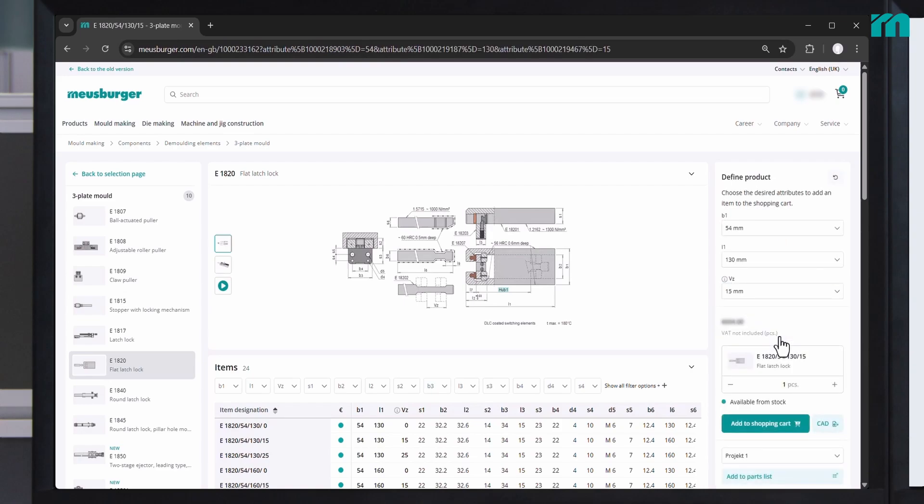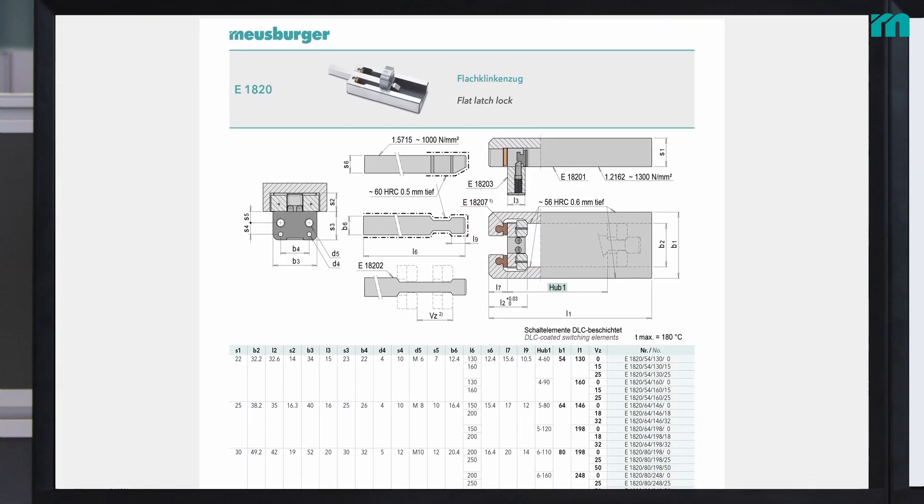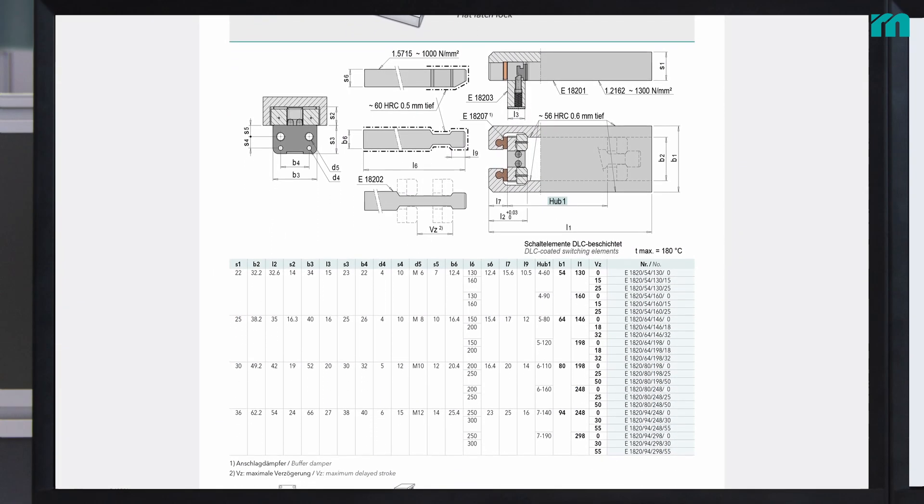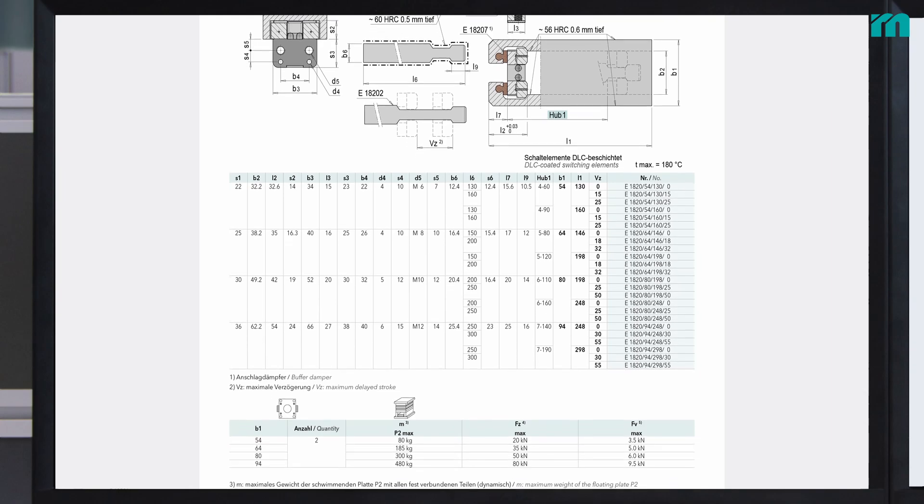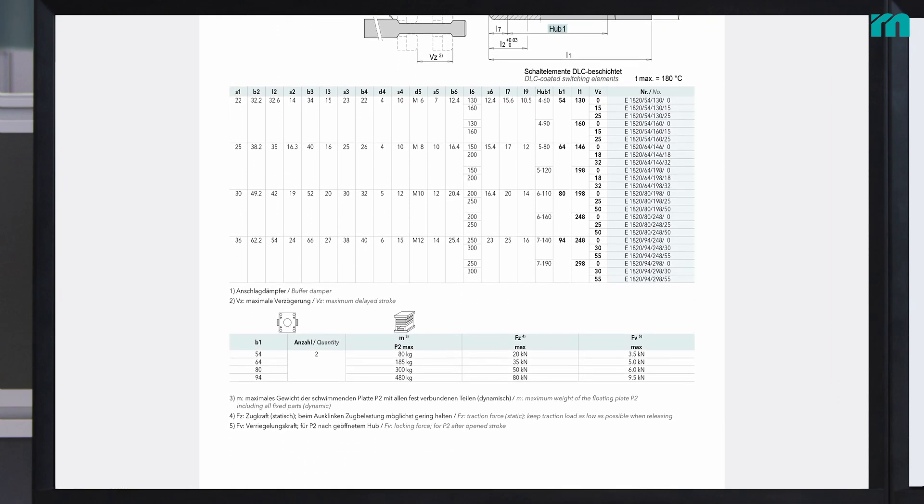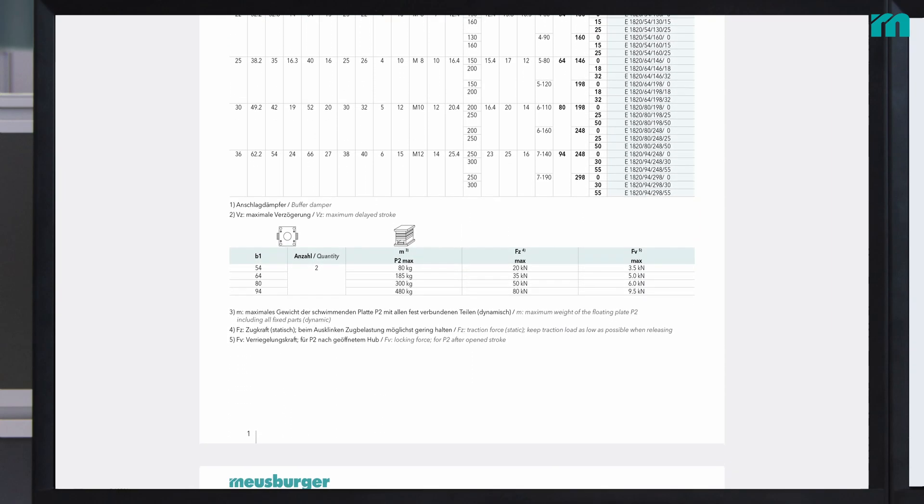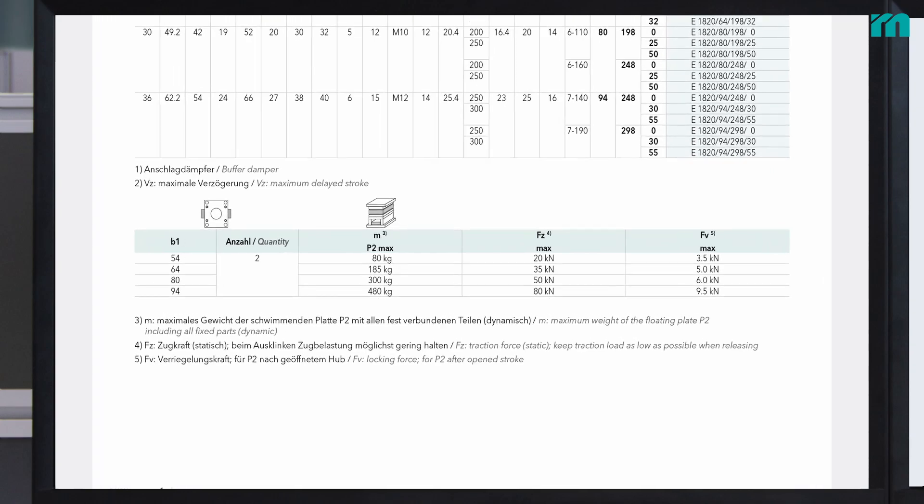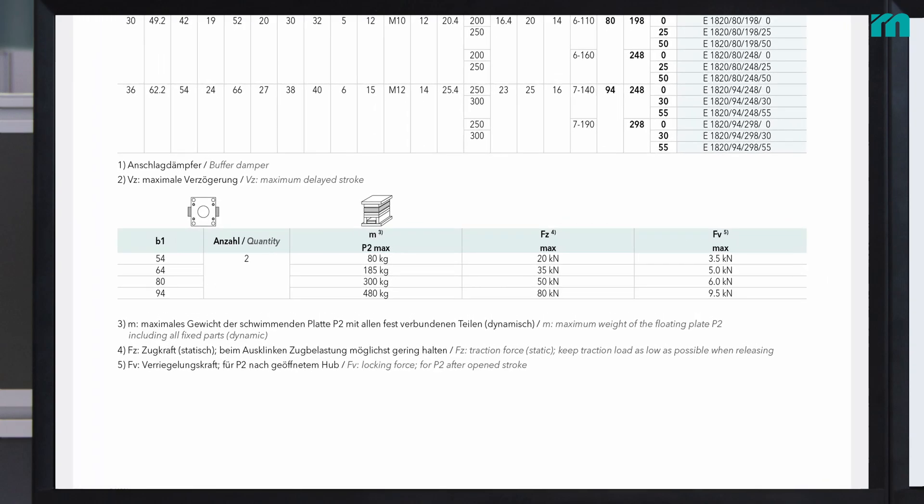The information on the data sheet helps determine the correct size and number. The data sheet also shows details such as the switching clearance, the switching zone, the locking force, and the traction force.